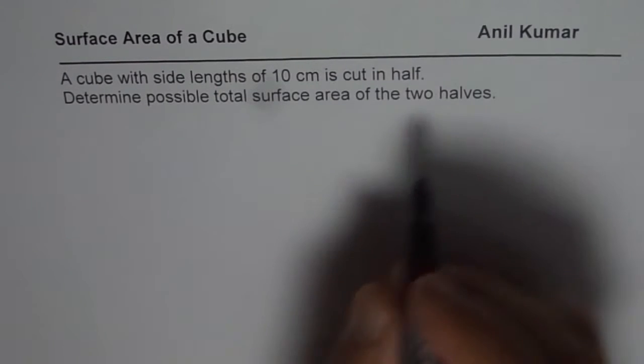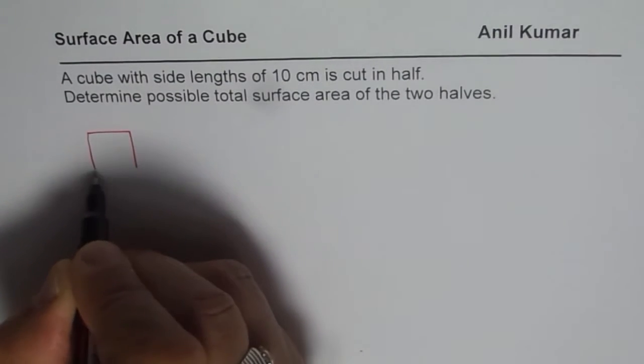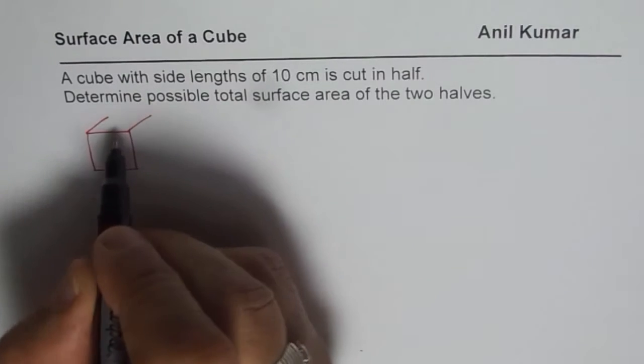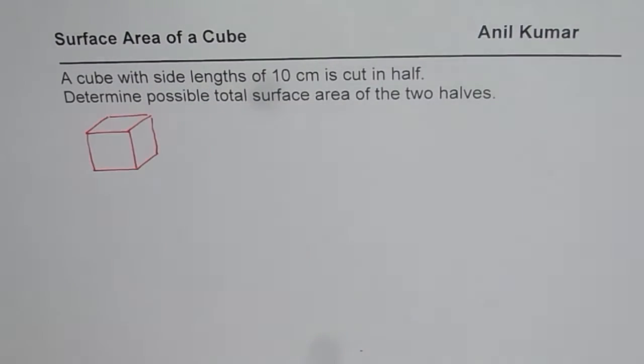So let us try to understand this question. What we have really is a cube which is having side lengths of 10 cm each. So let me just sketch one here. So that is the cube and it has 10 cm side length.